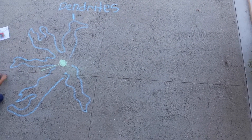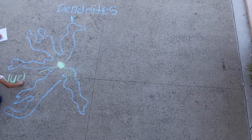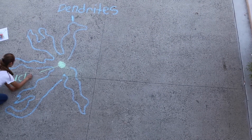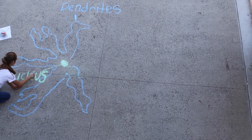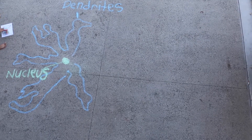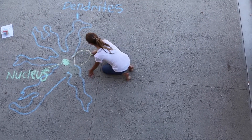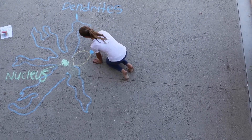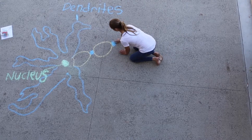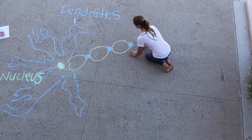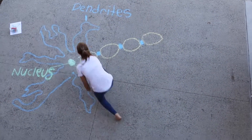The nucleus is located in the cell body and contains the genetic material in the form of chromosomes. The dendrites are the neuron's bushy branching extensions. They receive messages from other cells and conduct impulses towards the cell body. In simpler words, they look like roots.